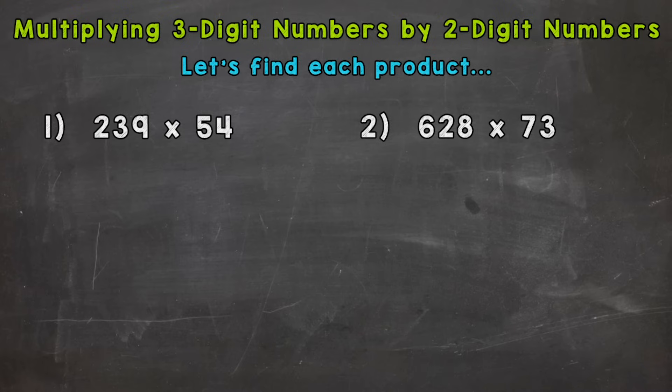Now remember, product means the answer to a multiplication problem. So for number one, we have 239 times 54.